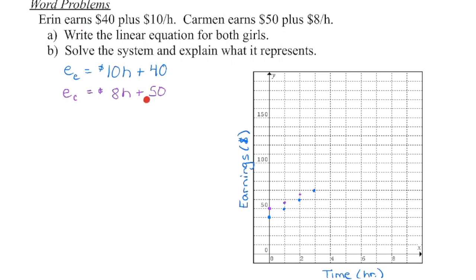So even though Carmen begins with more money, and I've used two different colors so we can see this, the slope is not going to rise as steeply as it is here because Erin is earning more money. So at some point, those two lines are going to cross. Now instead of doing this one by hand, because you can see your scale is going up by 10 on the y-axis, I'm going to switch to the calculator and get my solution that way.